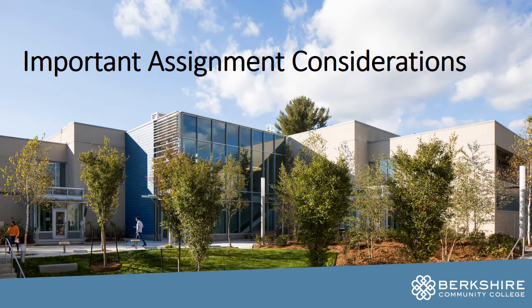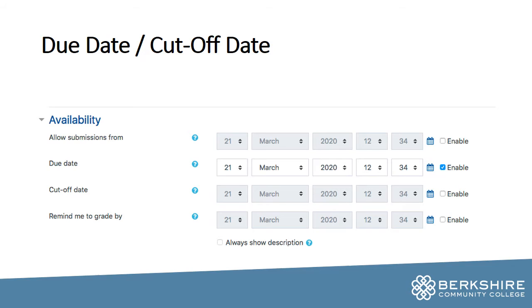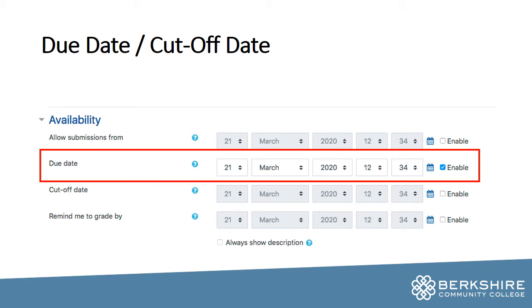Some important considerations for you as you set up your assignments. One is the due date — I recommend that you do have a due date enabled. Students can submit after the due date but their submission will be marked as late, so that's really important to know. If you want their grade to go down for a late submission, you might want to consider building that into your rubric so that timeliness is one of the metrics that you're evaluating them on.